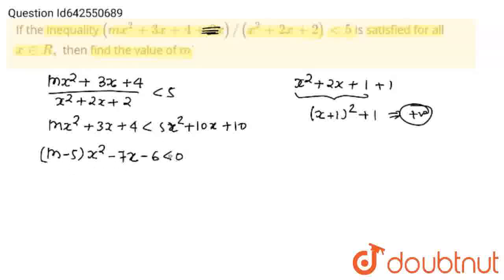If this quadratic value is always negative, this is possible when coefficient of x square, m minus 5, first this should be negative, and second, discriminant should be negative. So from here, we will get m less than 5 and d should be negative.